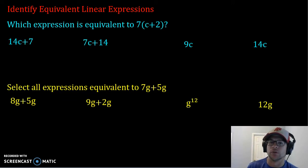So what we're going to do first is rework how the expression can look depending on a couple properties and then see which one is equal to that. So for the first one, which expression is equivalent to 7 times the quantity c plus 2?